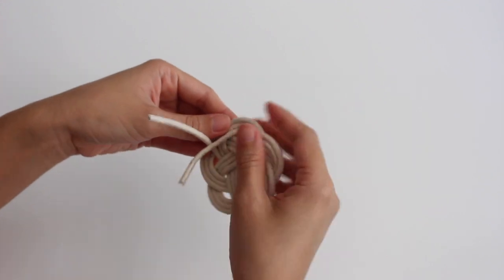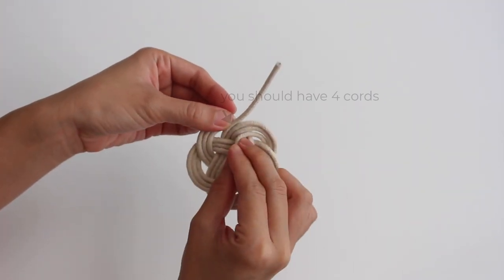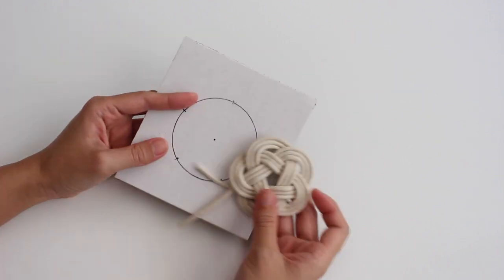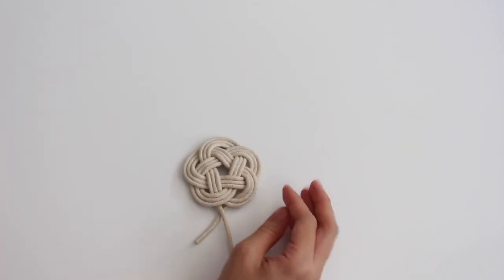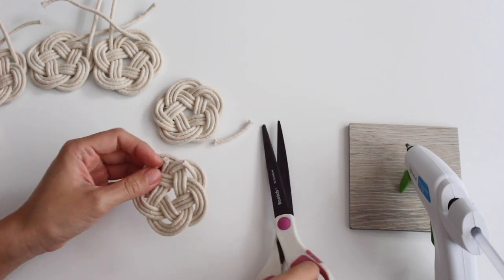At the end, you should have 4 cords. Cut the ends and tuck them under the cords.